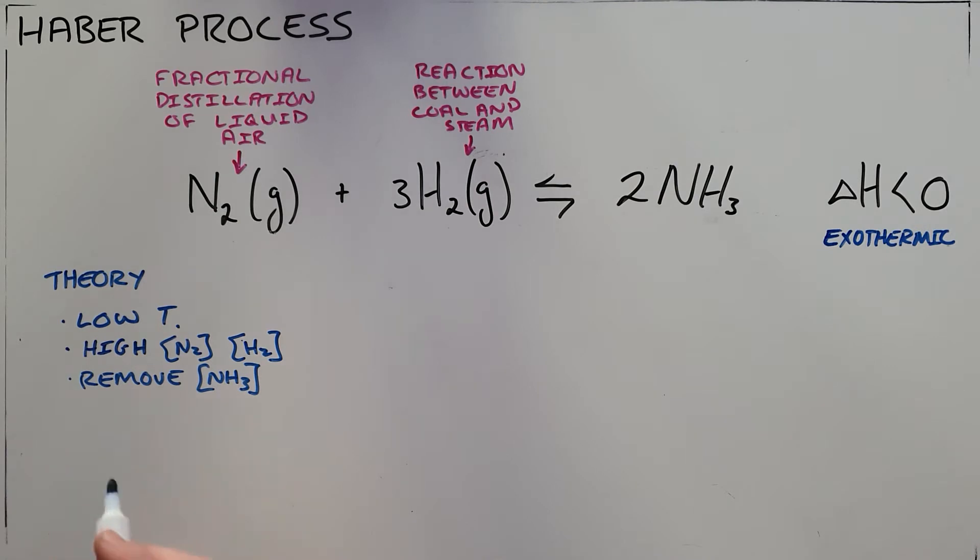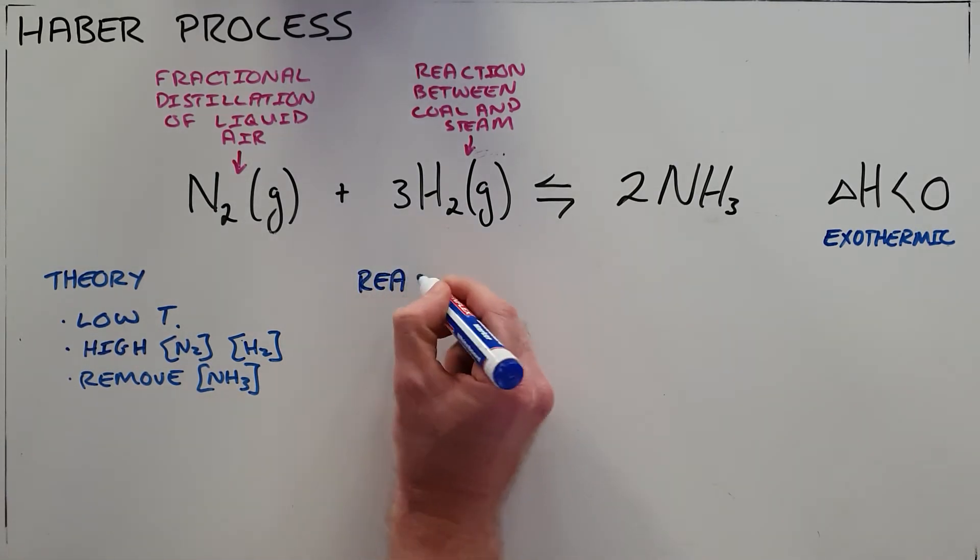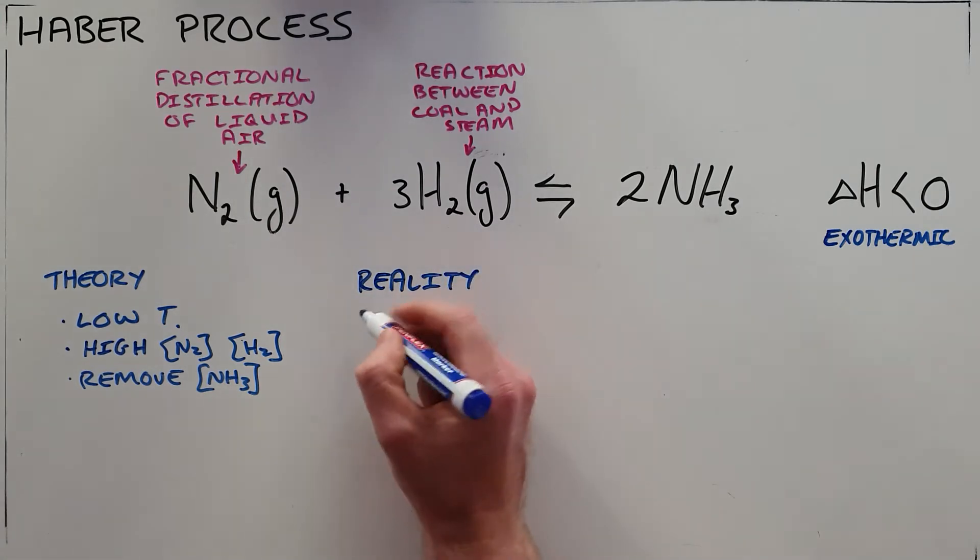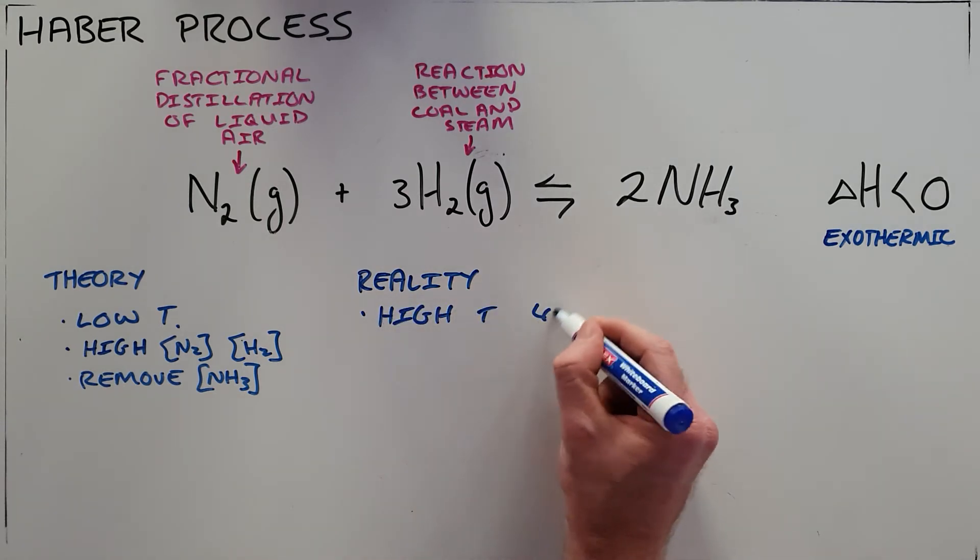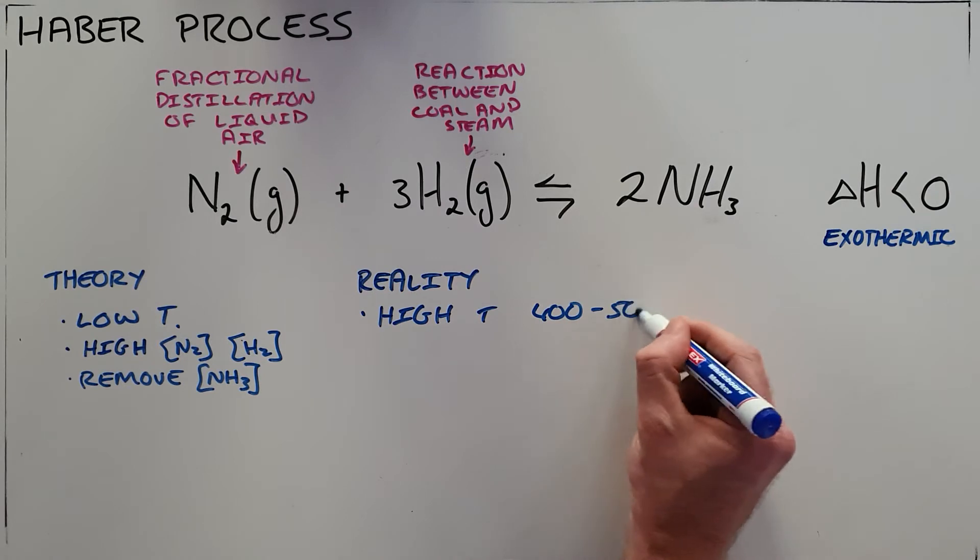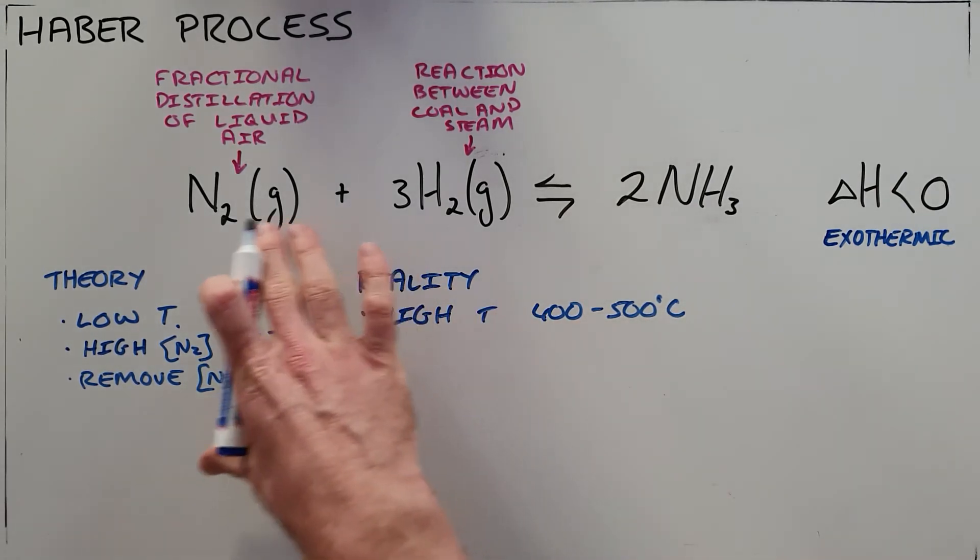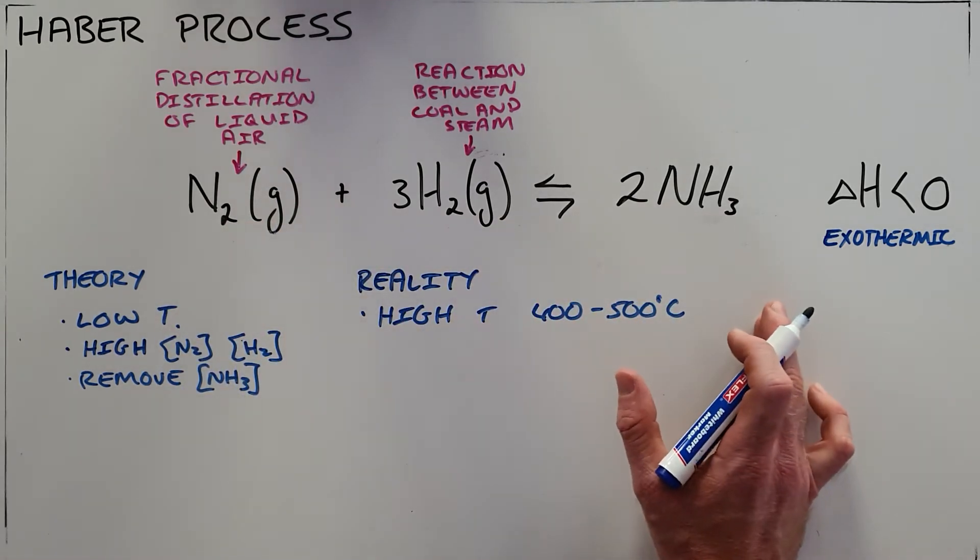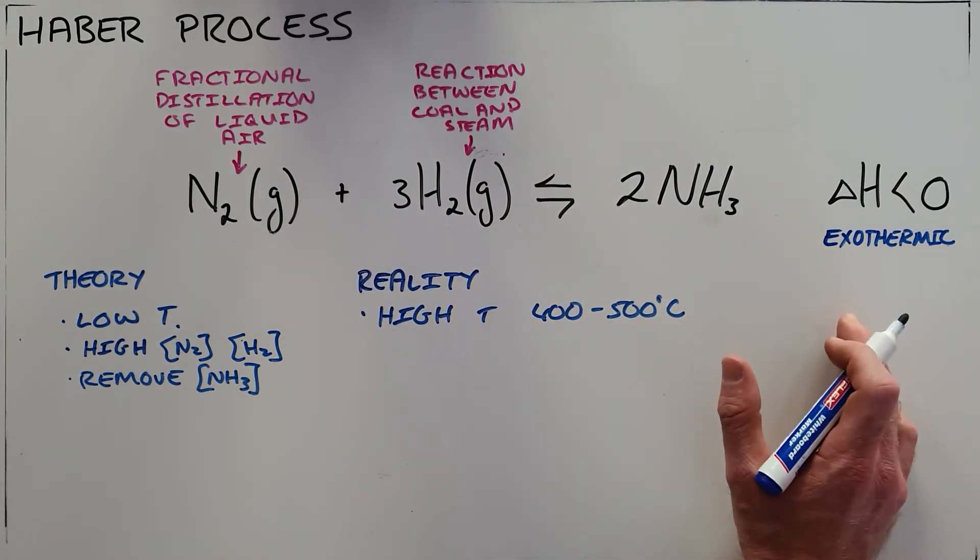In reality, this reaction needs to take place at a slightly higher temperature, normally somewhere between 400 and 500 degrees Celsius. The reason is that this reaction would take place very slowly at normal room temperature, so we prefer to do it at a higher temperature to increase the rate of reaction.